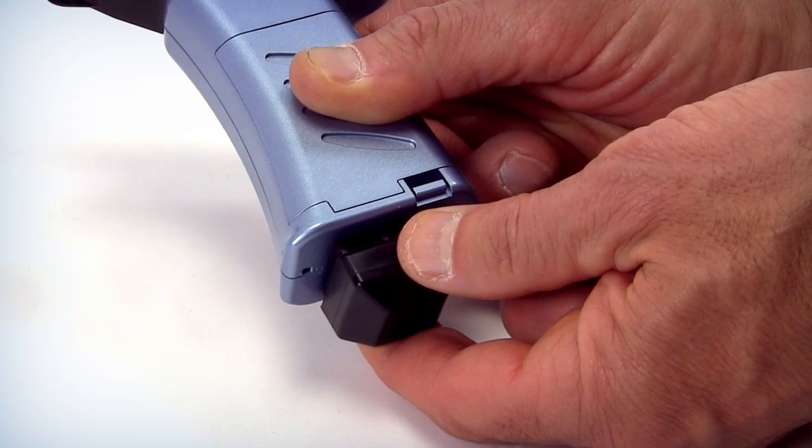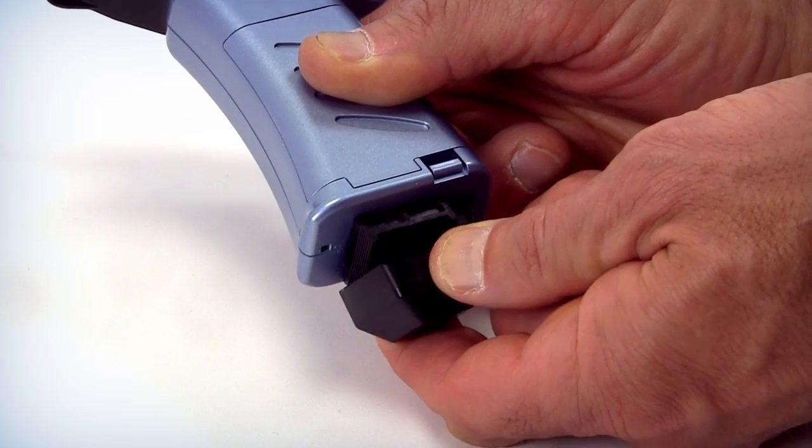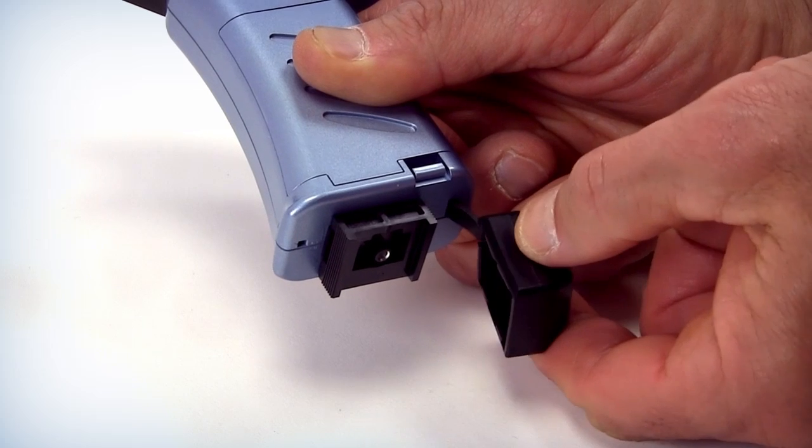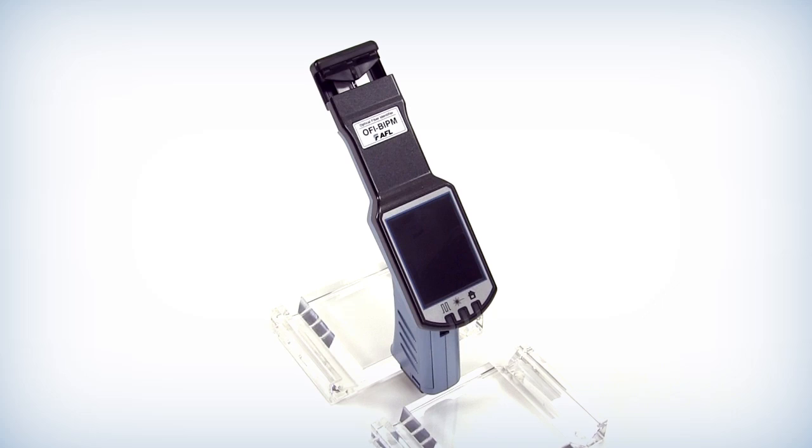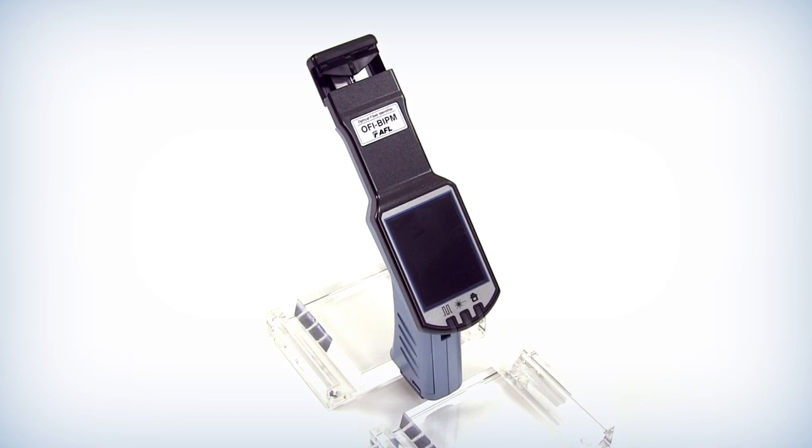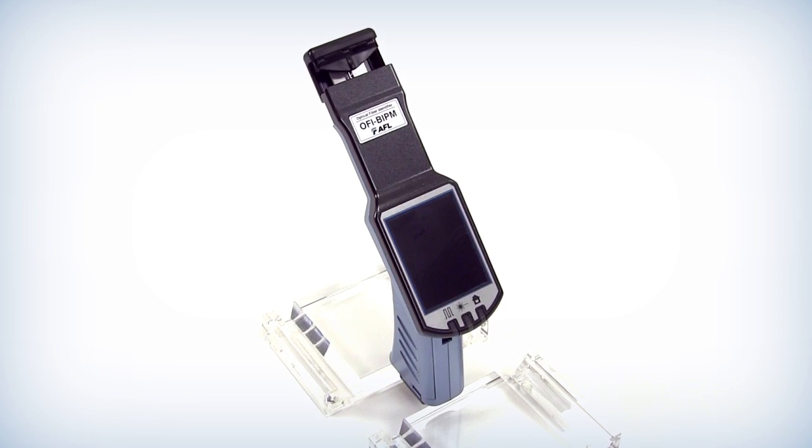Once you are confident there is no light on the fiber in question, you can disconnect the fiber and immediately use the power meter to verify that there is no power on the end of the disconnected fiber. Be sure to replace the dust cap on all fibers and ports that have been disconnected.